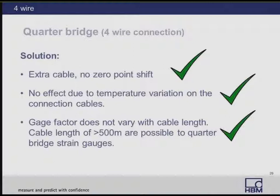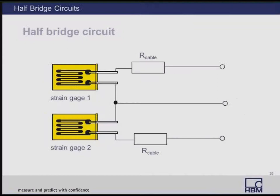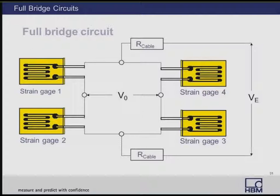Up to this point we have focused on quarter-bridge configurations. Many of these issues are lessened when using half or full-bridge configurations. In a half-bridge configuration, the minimum number of wires required is always three wires. Cable resistance is still a factor, and the same suggestions apply. The full-bridge circuit, on account of its favorable characteristics — larger measurement signals and automatic compensation of interference effects — is the preferred arrangement for transducer construction. It has the advantage that internal bridge wiring is short and symmetrical, all cables are identical in length and value, and the resistance of connecting wires is typically so small it can be neglected.